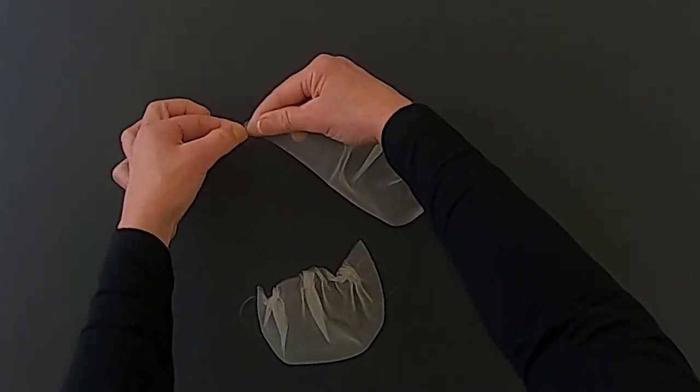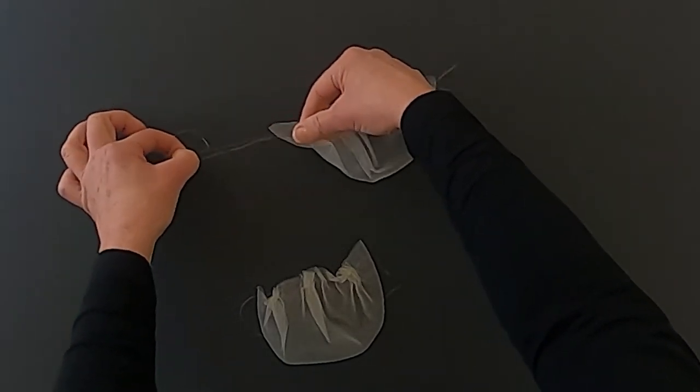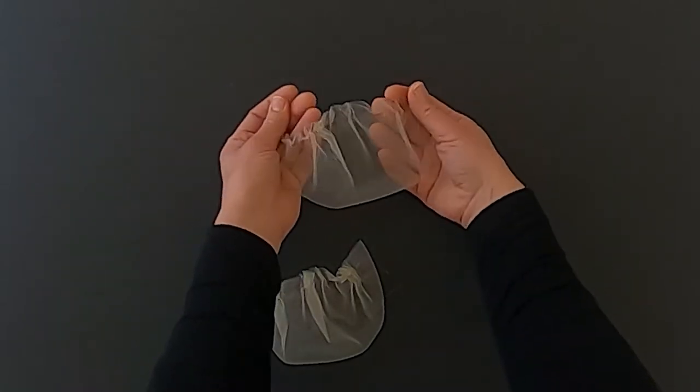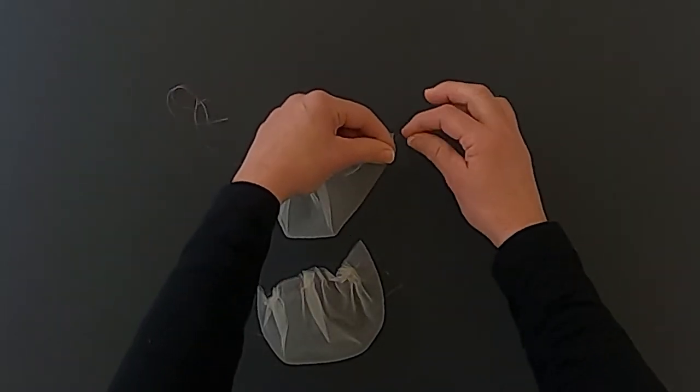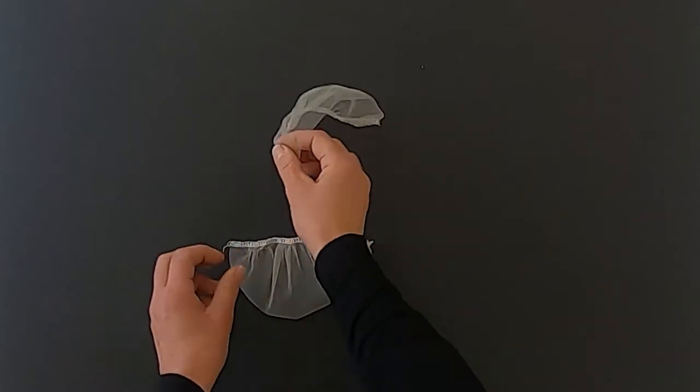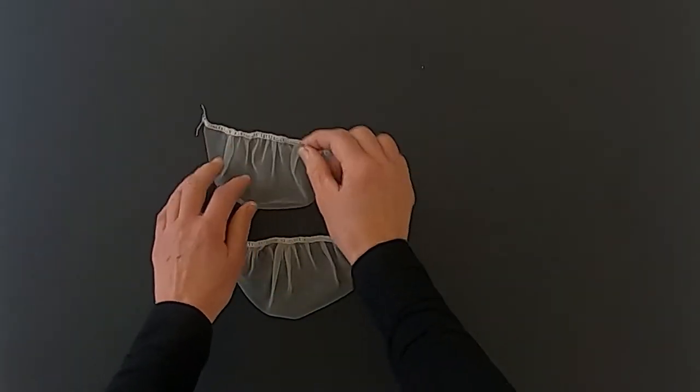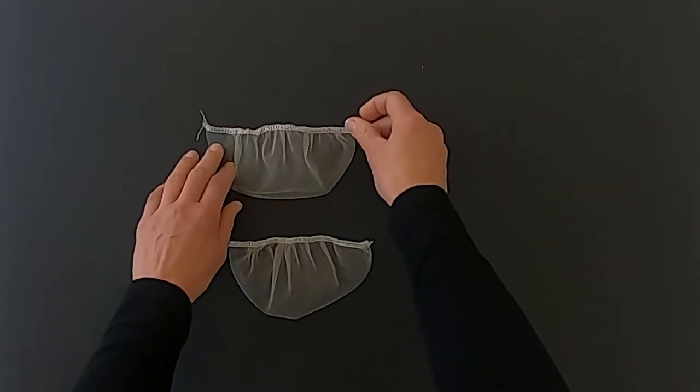Now gently pull the thread tails to form even gathers and gather that sleeve head poof until it's approximately six inches. Secure the length and the gathers by stitching on top of the basting stitch and back tacking at the start and finish of the stitch.